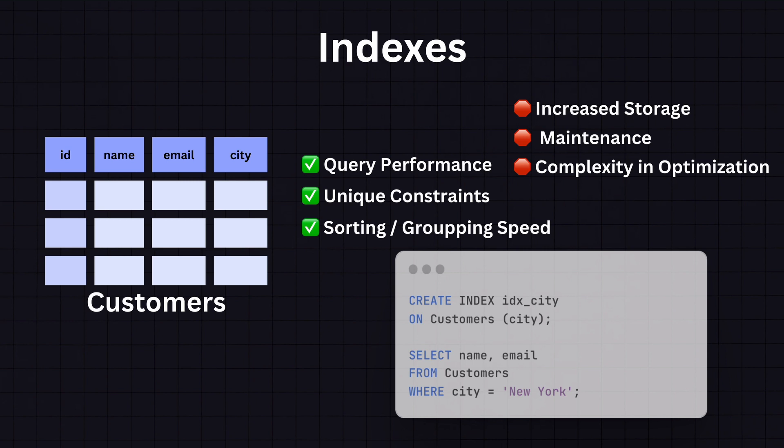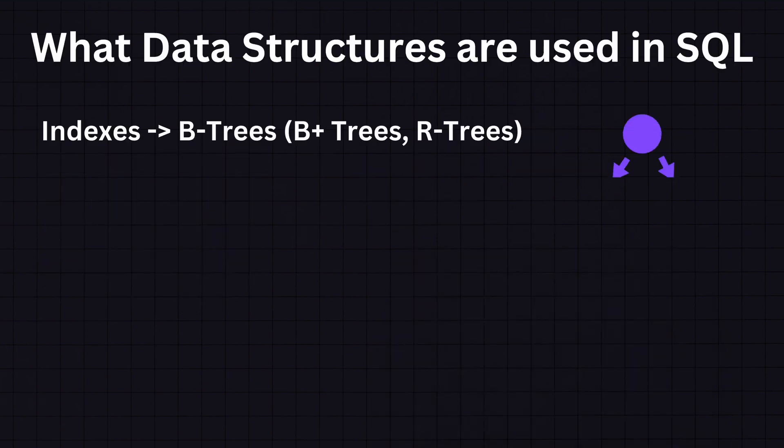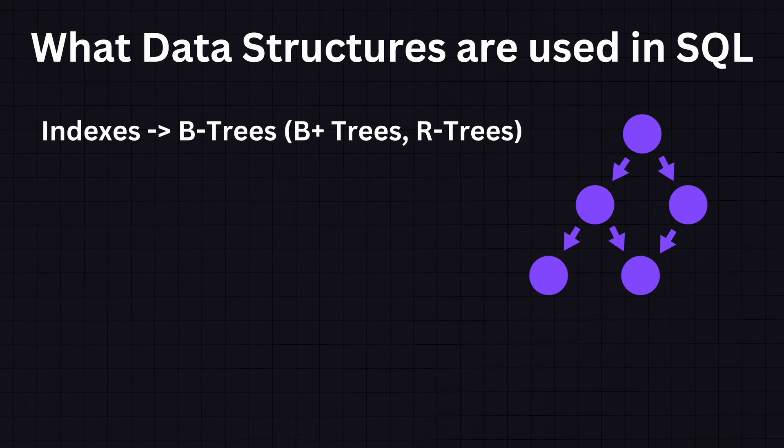Indexes are stored separately from the data table, usually in a structure optimized for quick search and retrieval. Most indexes are stored in B-trees or variations like B-plus trees. B-trees are the most common data structure used for indexing in SQL databases because they allow for fast lookups, insertions, and deletions. They also keep data sorted and allow all these operations in logarithmic time.